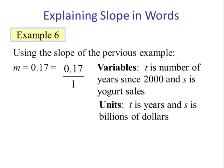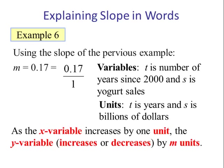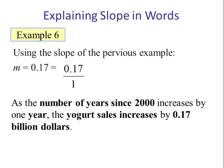And s is billions of dollars. So to interpret this slope we would say: as the x variable increases by 1 unit, the y variable either increases or decreases by m units. So in this case we would say as the number of years since 2000 increases by 1 year, the yogurt sales increases by 0.17 billion dollars.